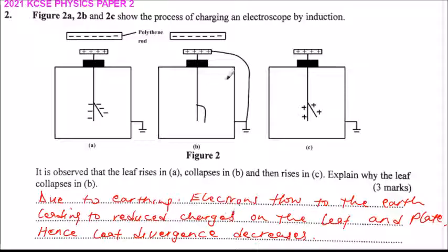So you can see when the plate is earthed, the leaf drops. This is because electrons are transferred to the earth, which means the electrons are reduced here. With that process, you then have a charged electroscope. So that's how you answer that question.